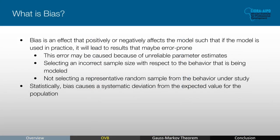Let's talk about what is bias. Bias is an effect that positively or negatively affects the model such that if the model is used in practice, it will lead to results that may be error prone. This bias may be because of unreliable parameter estimates, if there is an omitted variable bias or multicollinearity present in the data. Bias can also occur if an incorrect sample size is selected. For example, if one is studying how good a new formula for a soft drink is, you may need a much bigger sample size to represent the population.